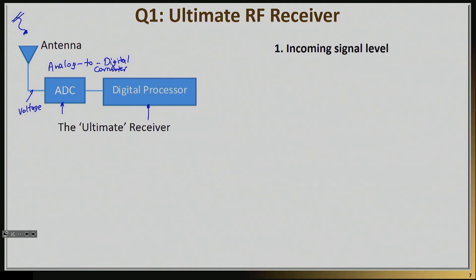The interesting thing about this question is that it's not entirely off base. The digital processor and DSP communities have made such amazing advancements that they've dramatically changed the way we think about RF receivers. In the old days, there were three very specific parts: an antenna, an analog system, and a digital system. Today, the digital and analog are actually mixed — in many ways you can't even tell exactly where the digital begins and where the analog ends.